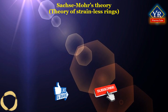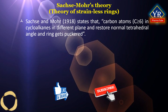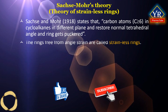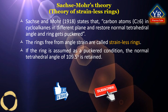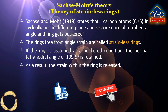Sachse-Mohr theory is also called the theory of strainless rings. It states that carbon atoms greater than or equal to 6 in cycloalkanes — meaning cyclohexane and higher — are present in different planes, restore the normal tetrahedral angle, and the ring gets puckered. The rings free from angle strain are called strainless rings. In other words, to explain the stability of cycloalkanes beyond cyclopentane, Sachse and Mohr proposed that a ring is absolutely free from strain if all the ring carbons are not in the same plane. If the ring is assumed to be in a puckered condition, the normal tetrahedral angle of 109.5 degrees is retained and, as a result, the strain within the ring is released.